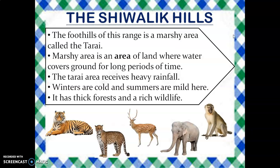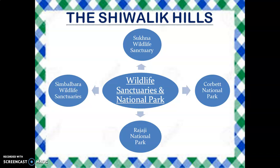The foothills of this range form a marshy area called the Terai. A marshy area is an area of land where water covers the ground for long periods of time. The Terai area receives heavy rain. Winters are cool and summers are mild — neither too hot nor too cold. It has thick forests and rich wildlife. Animals like tiger, leopard, deer, elephants, and monkeys are found in this area. This area also has many wildlife sanctuaries and national parks developed by the Government of India, including Corbett National Park, Rajaji National Park, Simbalwara Wildlife Sanctuary, and Sukhna Wildlife Sanctuary.